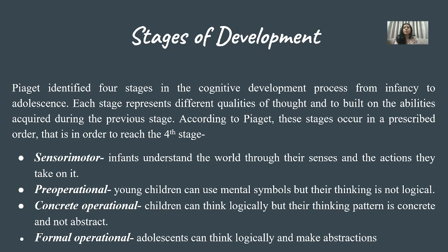The four stages are: Sensorimotor, Pre-operational, Concrete operational, and Formal operational. Piaget identified four stages in the cognitive development process from infancy to adolescence. Each stage represents different qualities of thought and builds on the abilities required during the previous stage.